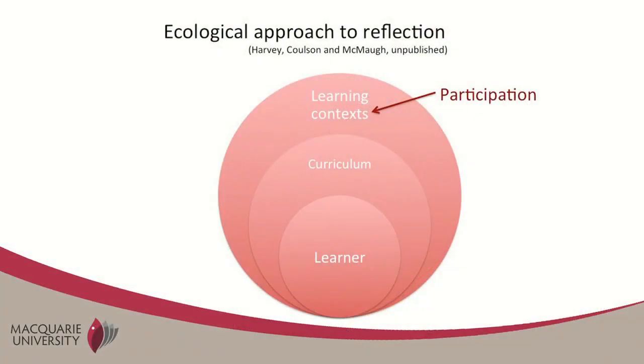One of the theoretical approaches I use in much of my research is something called an ecological approach. As I discuss reflection, I'm constantly making references to that approach. In essence, we're looking at the environment of the learner — that would be, for example, the participation experience, but also the learning experience on campus — and the individual student. In the ecological approach, we're looking at how those two interact and the best possible fit between them, taking into account all the other contextual influences on the student and those environments. That is the only way we can ever make sense of attaining the best possible learning outcomes for our students, if we consider all of those contexts together.